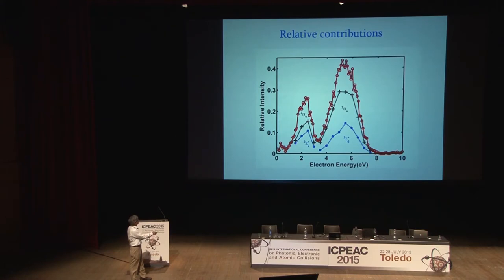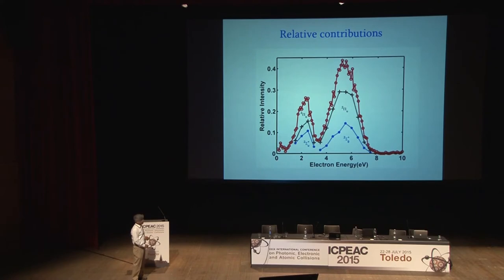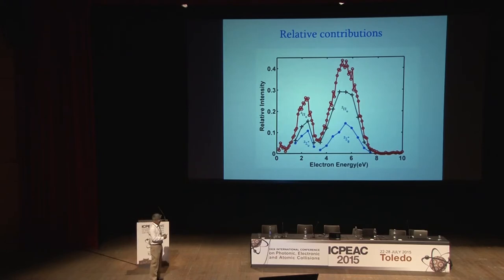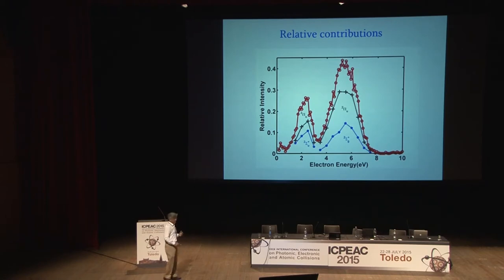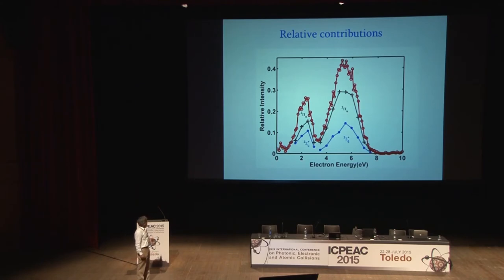We are puzzled by the σU contribution at the low-energy peak, because it is supposed to contribute only to the zero-eV resonance. Whether it is a different sigma resonance contributing here, we cannot clearly explain right now. But the contribution of σG and πU in the same higher-energy peak can be explained in terms of the potential energy curves coming very close together, and considering the finite width of the resonances.